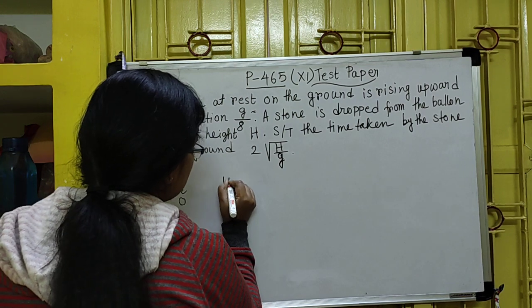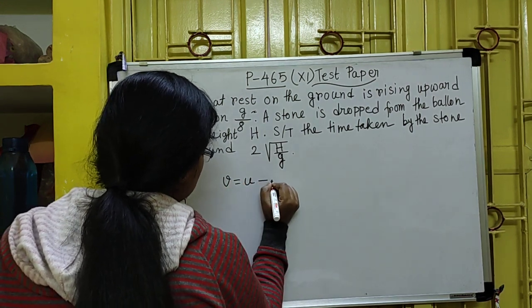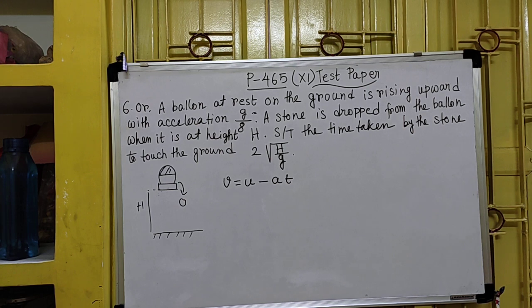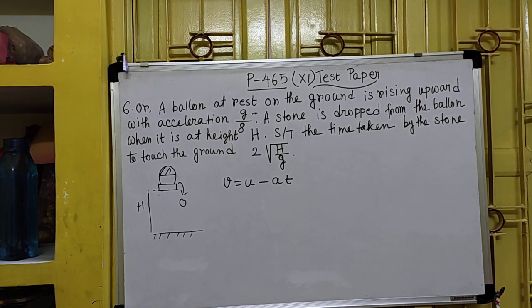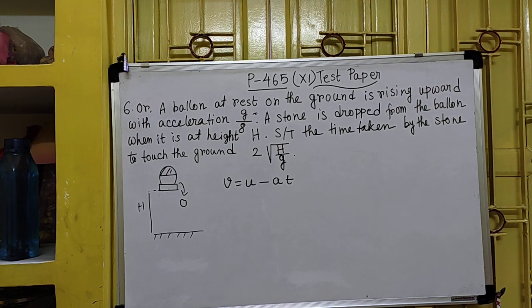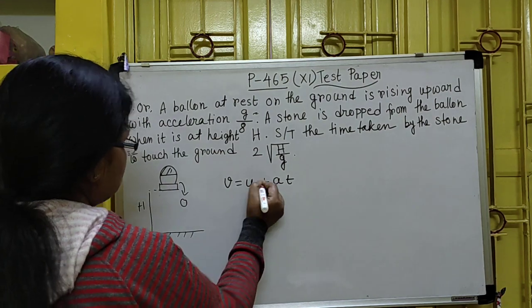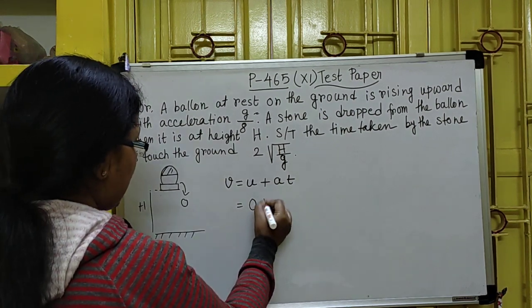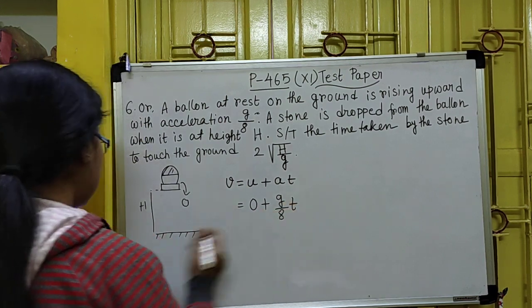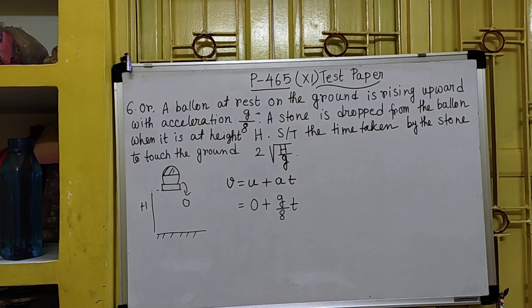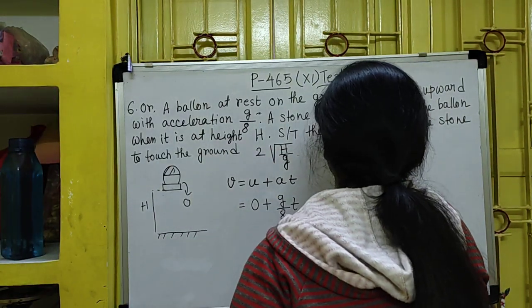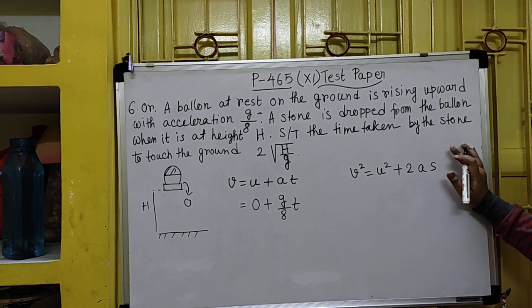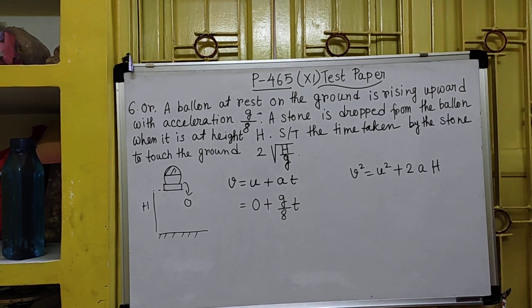What formula will we use? We can use v² = u² + 2aS. In place of S, I can put H. The initial velocity u is 0, and acceleration a is g/h. So v² = 0 + 2·(g/h)·H.